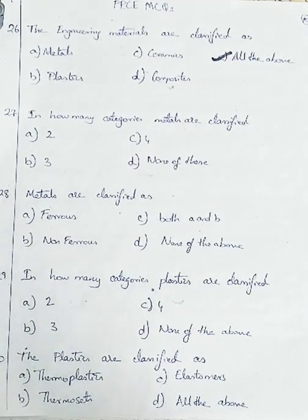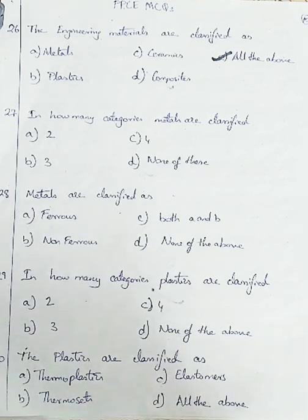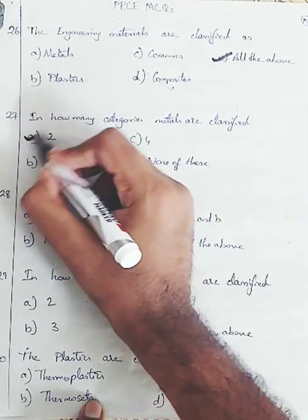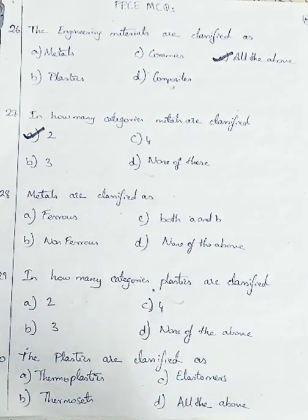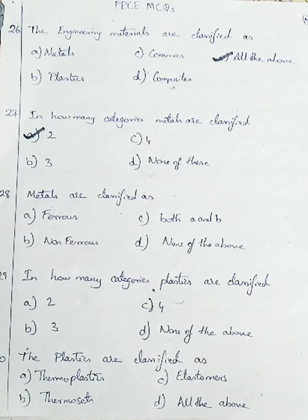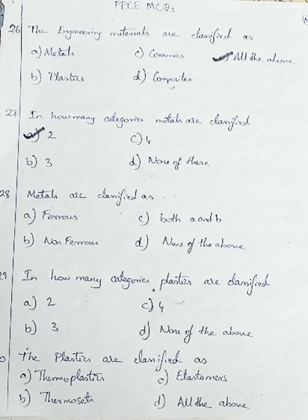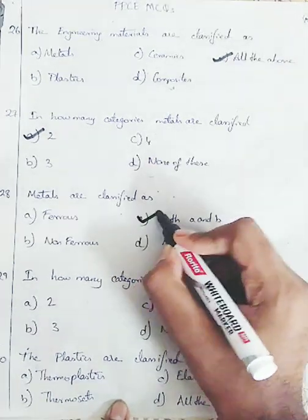How many categories are metals classified into? Metals are classified as ferrous and non-ferrous materials — 2 categories. Option A: ferrous, Option B: non-ferrous material, Option C: both A and B, Option D: none of the above. So we are going with Option C, both A and B.